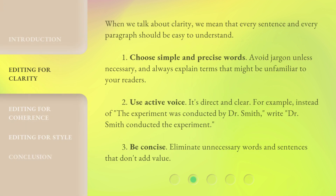When we talk about clarity, we mean that every sentence and every paragraph should be easy to understand. First, choose simple and precise words. Avoid jargon unless necessary, and always explain terms that might be unfamiliar to your readers. Second, use active voice — it's direct and clear. For example, instead of 'The experiment was conducted by Dr. Smith,' write 'Dr. Smith conducted the experiment.' Third, be concise. Eliminate unnecessary words and sentences that don't add value.